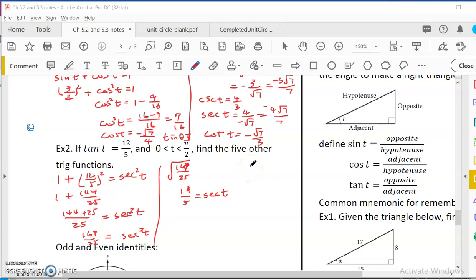In the last video, I was working on trying to find other five trig functions when I have tangent. And I noticed that I have a Pythagorean identity of 1 plus tangent squared equal to secant squared. So I'll use that to find secant squared. And so I would say secant t is square root of 169 over 25.